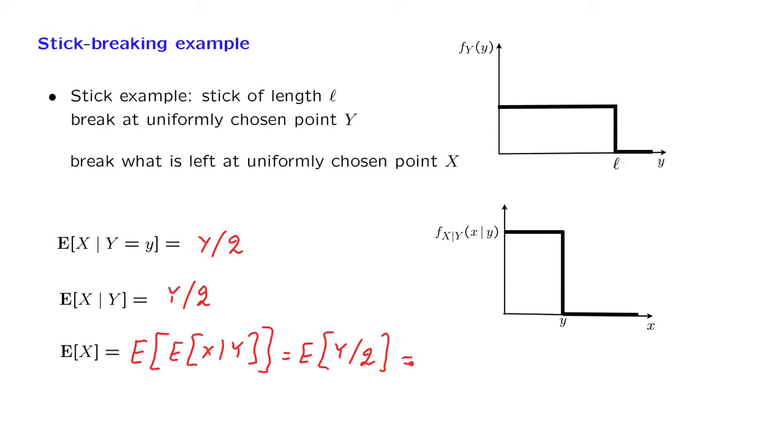So this is the same as 1 half the expected value of Y. And since Y is uniform in the range from 0 to L, the expected value of Y is equal to L over 2, which gives us an answer of L over 4.